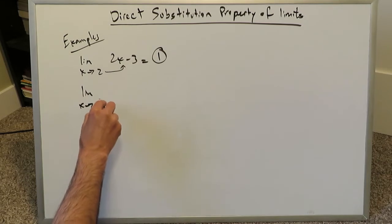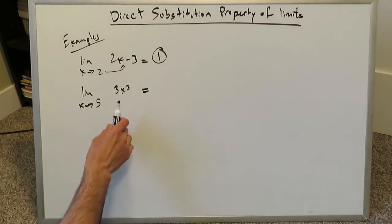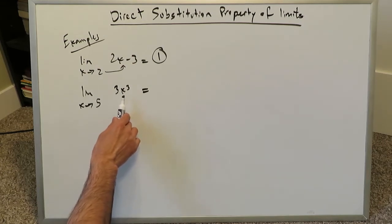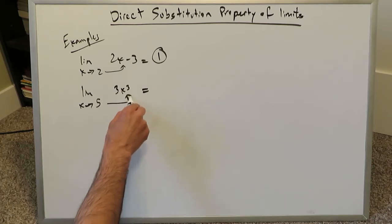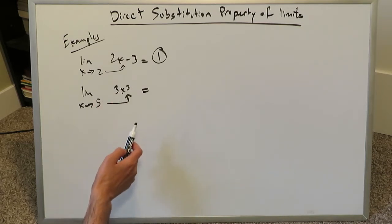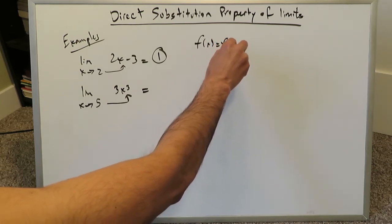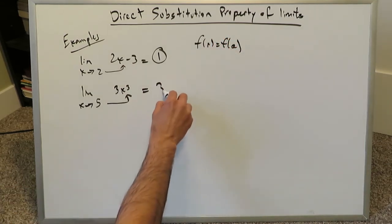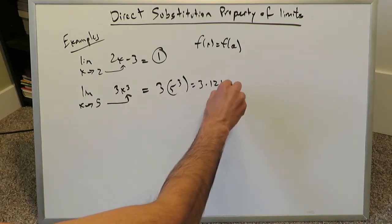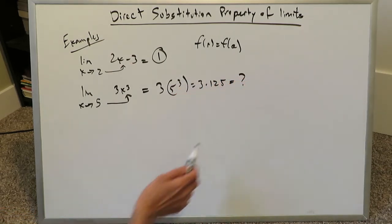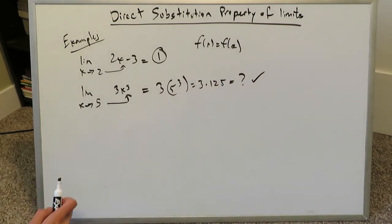Limit as x approaches 5, we have 3x cubed. The cubic function has a domain of negative infinity to positive infinity, so you could literally plug 5 in. 5 falls very well into that domain. As we know, f of x will equal f of a. You do 3 times 5 cubed, which is 3 times 125, and whatever result you calculate will be your answer — an easy, smooth result.